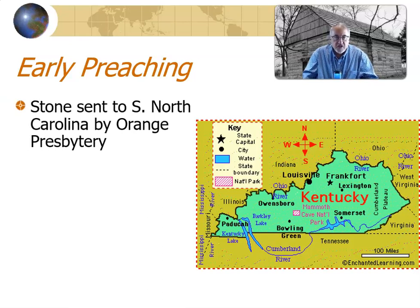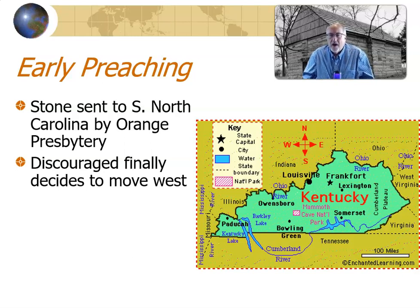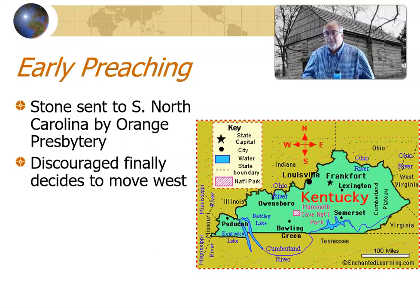His early preaching then: he is sent to southern North Carolina and the Orange Presbytery. But he's not that happy — he gets discouraged. He's highly motivated; he wants to proclaim the love of God and the unity of people, and wants people to respond. But he gets discouraged because it's not what he thought it would be. This happens sometimes in ministry, but you have to persevere.